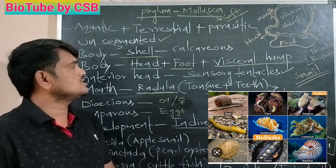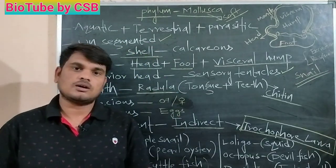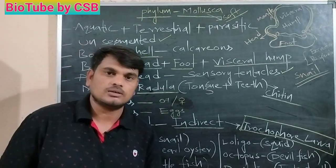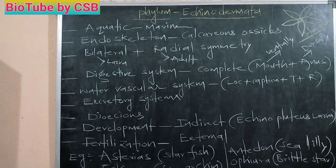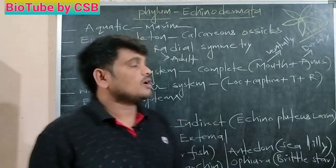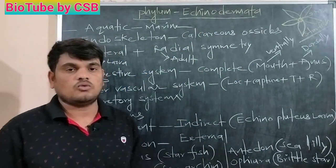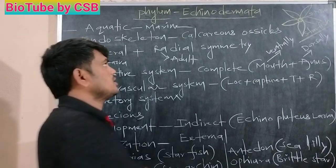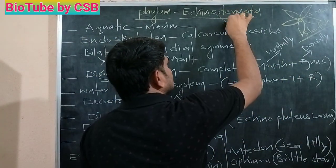Those are the general characters of phylum Mollusca. Our next topic is phylum Echinodermata. Echinodermata means spiny skin — 'echino' means spiny, so spiny skin is present.